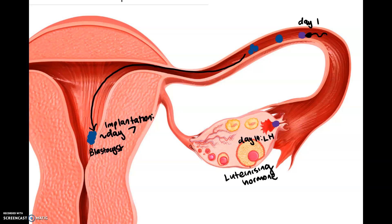When the blastocyst implants, it releases a very important hormone: beta-HCG, which stands for beta-human chorionic gonadotropin. The word 'chorion' simply refers to the placenta, because the specific cells of the blastocyst that release beta-HCG will go on to form the placenta.